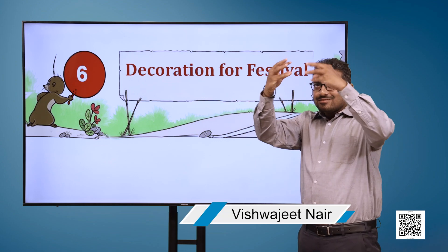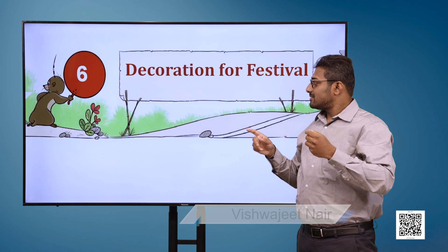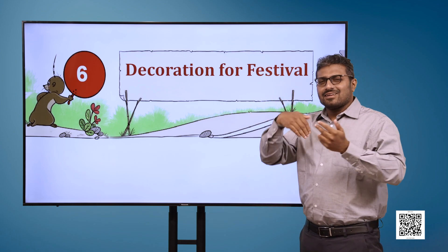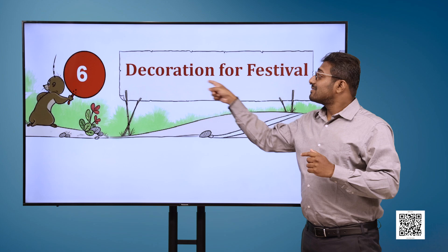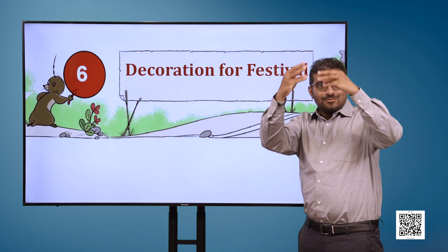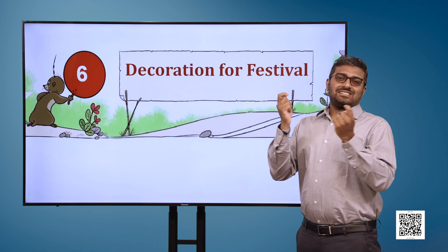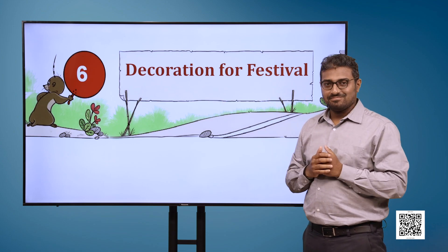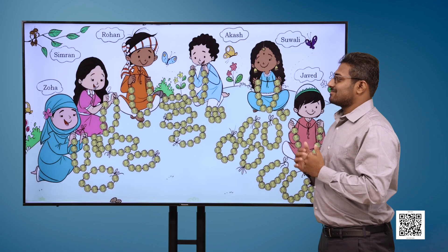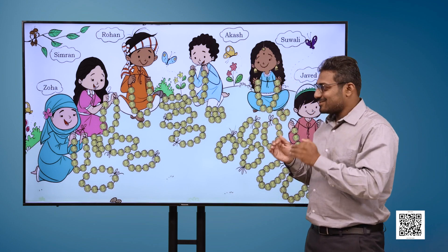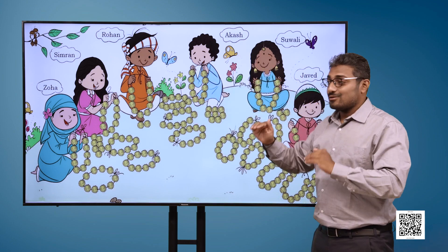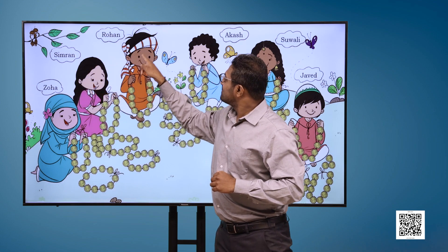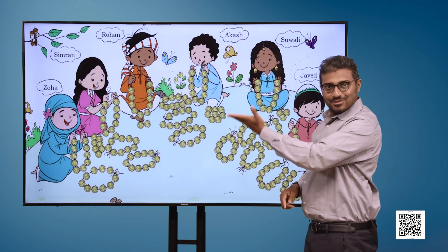Decoration for Festival. The image shows some children with garlands in their hands. We can also see some garlands lying on the floor. The kids are Zohar, Simran, Rohan, Akash, Suwali, and Javed.